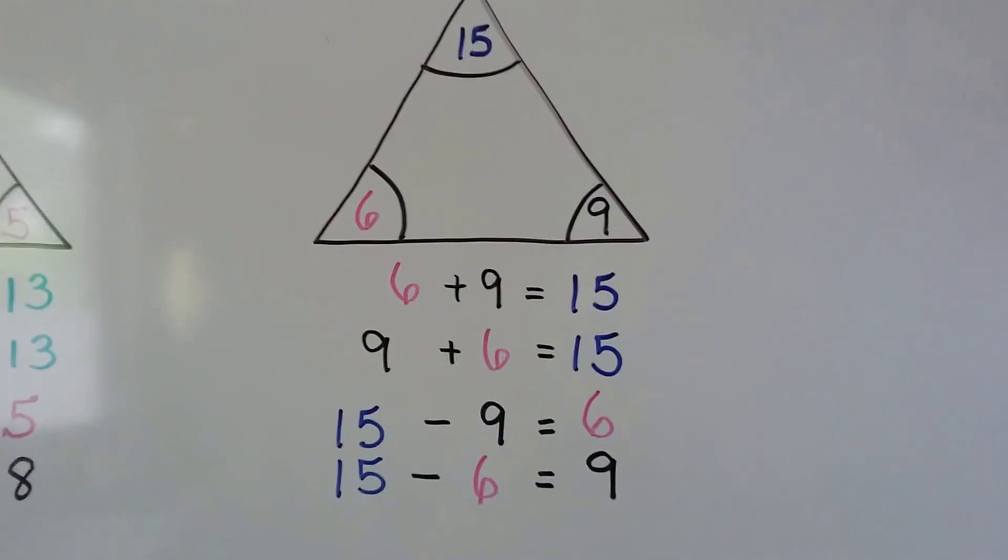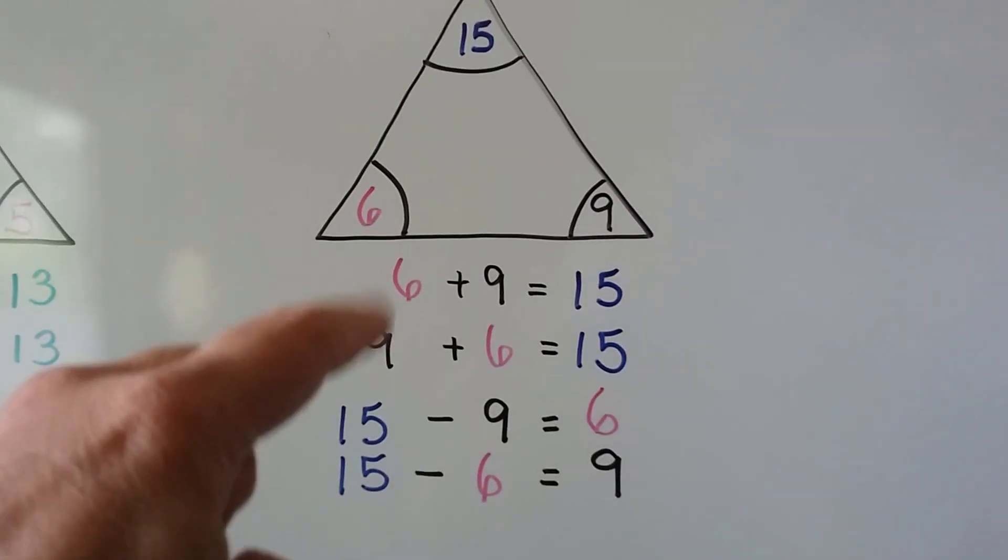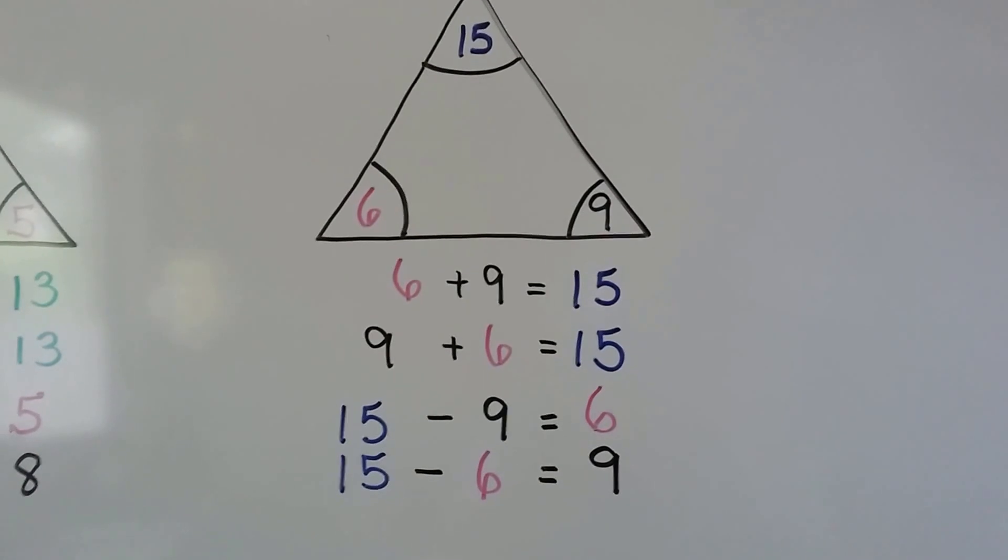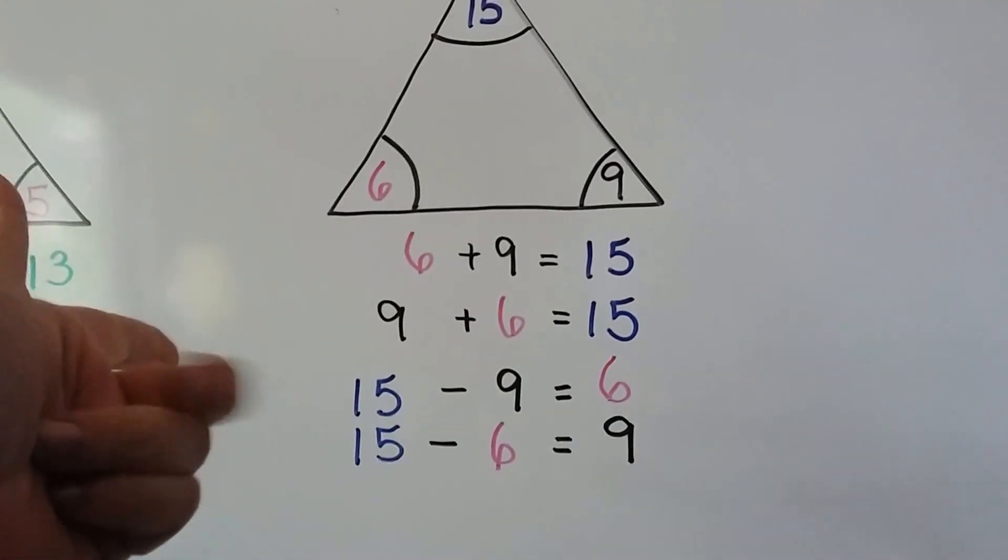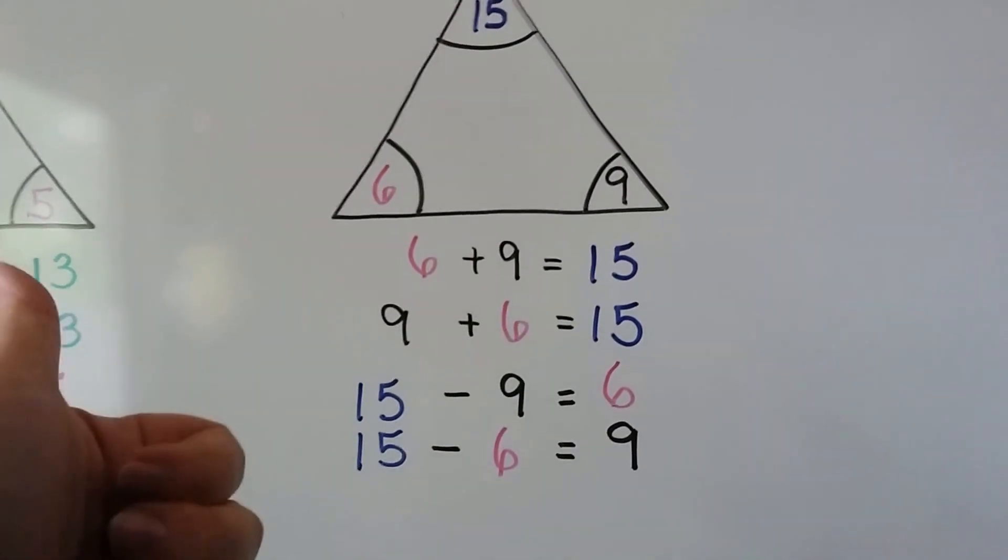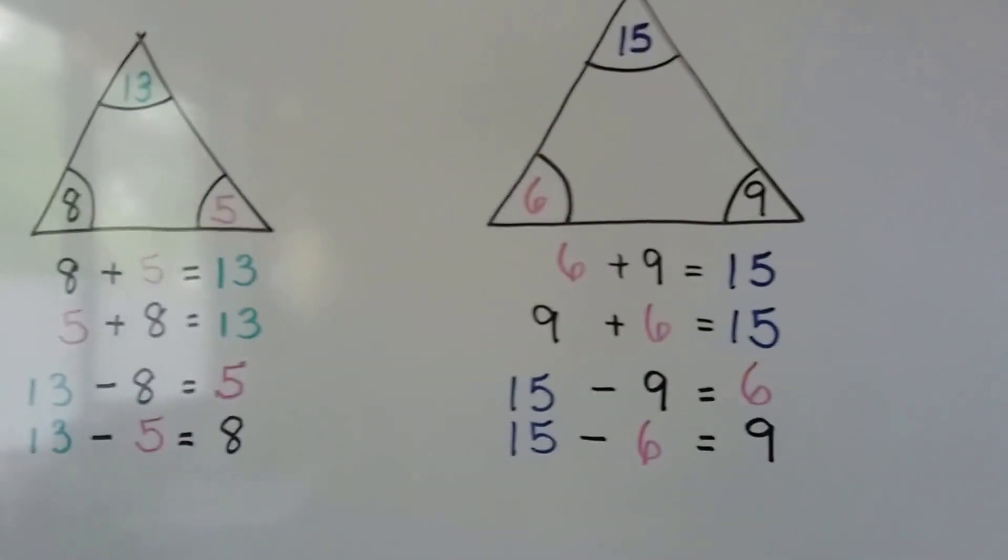We can even check to make sure we're right. We can do the addition ones to make sure we're right. We can count on from the nine. Nine, ten, eleven, twelve, thirteen, fourteen, fifteen. Yeah, it was six. So we know we got it right.